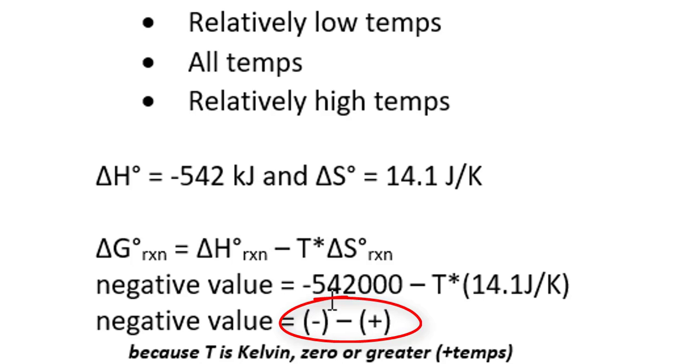We'll have a negative term from the delta H, as denoted by the negative in the parentheses, and we subtract from that negative a positive term. The T delta S term, in this particular instance, is always going to be positive because we have always positive temperatures and we have a positive delta S value. So effectively, we're subtracting a positive number from a negative number, which increases the negative value.